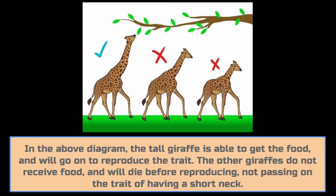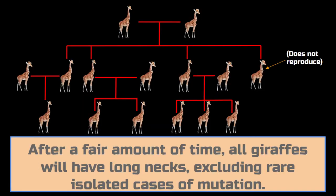How natural selection works is that organisms with beneficial adaptations will survive long enough to have children, which inherit the favorable trait, therefore allowing them to survive as well. Organisms without favorable traits will die before reproducing. This is how an entire species can inherit a favorable trait.